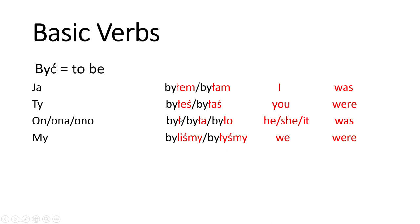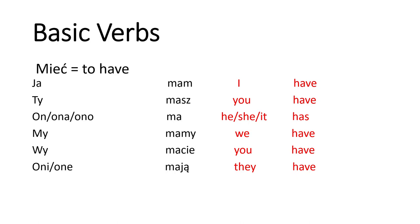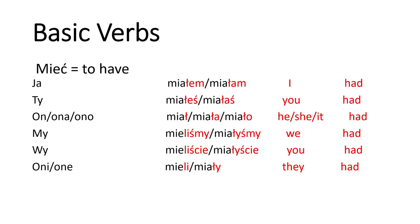In the plural, things are different. For male gender we replace the ending with '-li', so 'myśmy byli'. For female we use '-ły', so 'myśmy były'. Keep in mind that in the plural, the female form is also used for objects and animals. The form with '-li' is for male gender humans only, while '-ły' is for women, things, and animals.